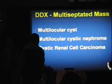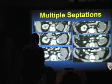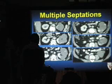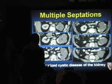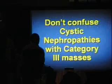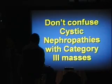The differential with multiple septations includes multilocular cyst, cystic nephroma, and renal cell — you can't tell them apart. Be alert to localized cystic disease of the kidney, where the entire kidney is involved with cysts — you don't want to send this patient to surgery. Don't confuse cystic nephropathy with category 3 lesions.